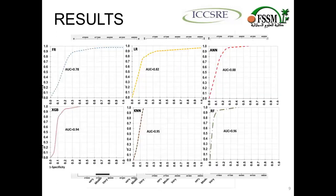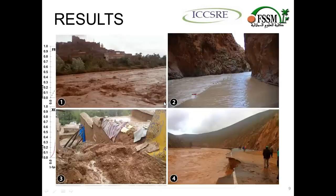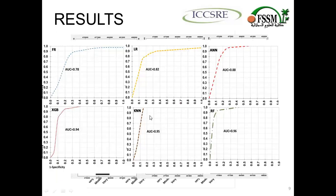These maps have no significant scientific value without validation. For the validation, we used the testing data and the ROC AUC curve. The AUC values present a range with a minimum of approximately 0.78 and a maximum of 0.96. The values obtained from the area under the curve for FR, LR, and ANN are respectively 0.78, 0.82, and 0.88. The machine learning algorithm values indicate a good accuracy level, better than the other models.